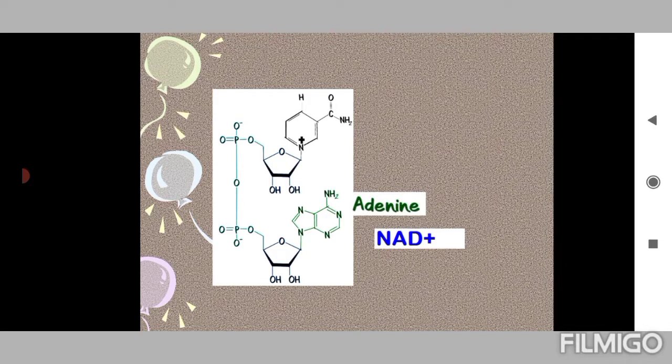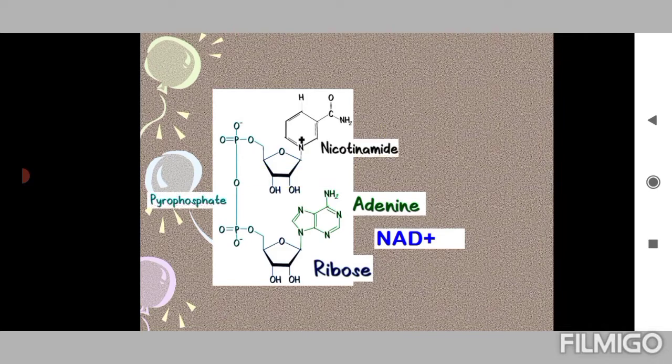First of all, adenine - yes, of course it's there. Ribose is there, and an additional ribose here also, because it's adenine dinucleotide. Nicotinamide adenine dinucleotide - they are connected through pyrophosphate. And this is nicotinamide.